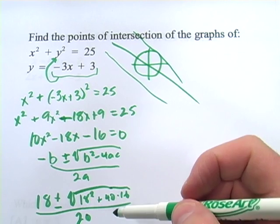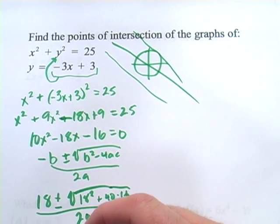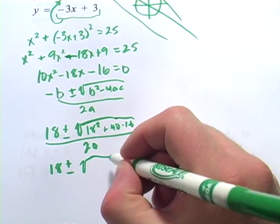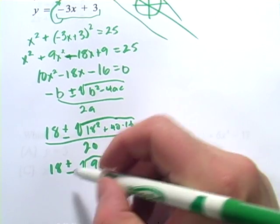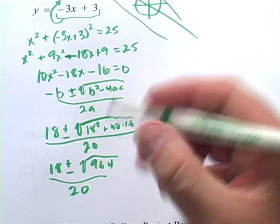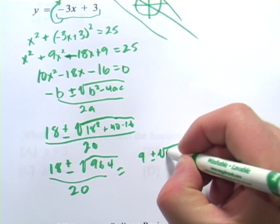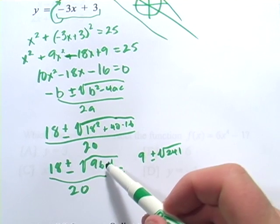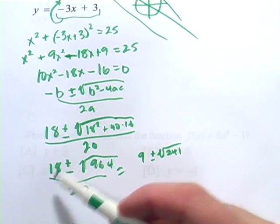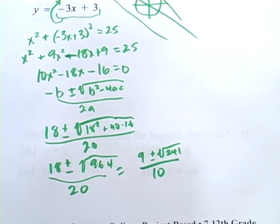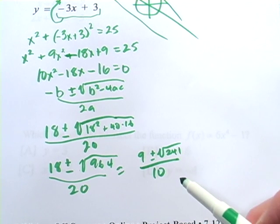And I can do some simplifying here. Let's see, that comes out to 18 plus or minus the square root of 964 over 20. And that is 9 plus or minus the square root of 241. What I did there is I took a 4 out and then took a 2 out of the top and the bottom. And I get that. I think that's about as simple as we can get it. Those are our two answers for x.